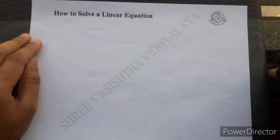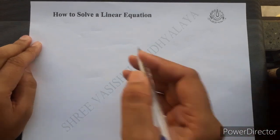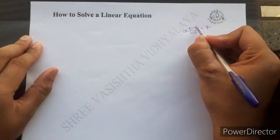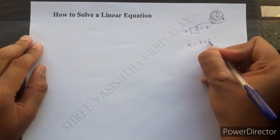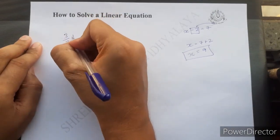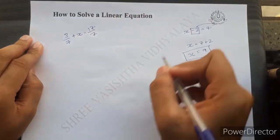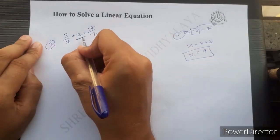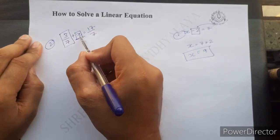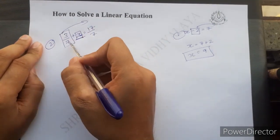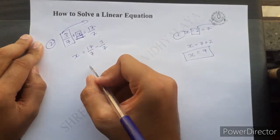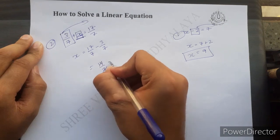Now let us see how to solve linear equations with certain examples. For x minus 2 equals 7, transposing minus 2 to the RHS gives x equals 7 plus 2, so the answer is 9. Similarly, for 3 by 7 plus x equals 17 by 7, we send 3 by 7 to the RHS: x equals 17 by 7 minus 3 by 7 equals 14 by 7 equals 2.